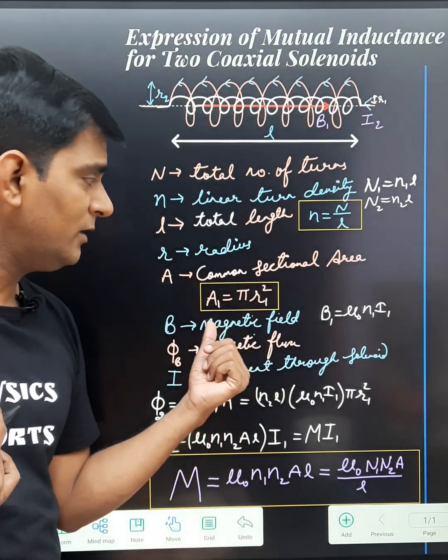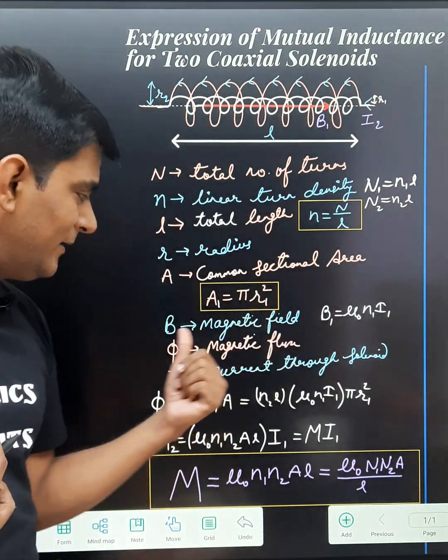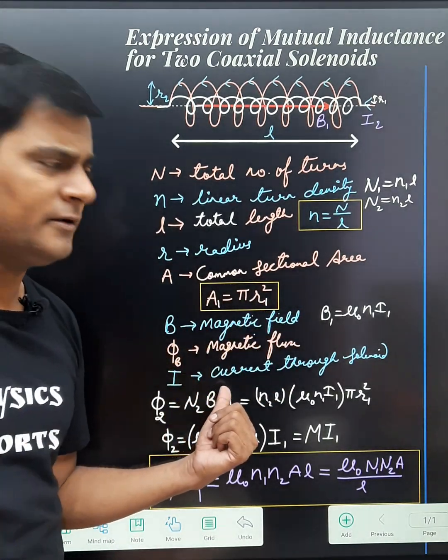The common cross sectional area will be A1 equals to π R1 square and B is magnetic field, φ_B is the magnetic flux, etc.